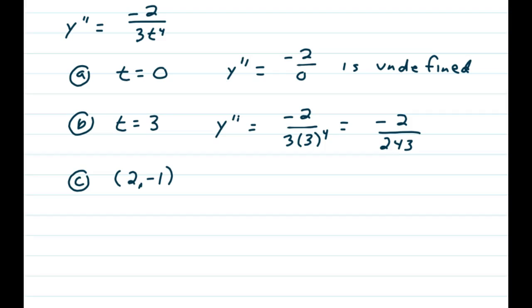Now part c is a little different. I'm not giving you the t value. I'm giving you the ordered pair 2 comma negative 1, which of course is x comma y. So we bring back our parametric equations. x is equal to t cubed plus 1. y is equal to 3t squared minus 4. And we know that we're looking for a t value that will generate that point.